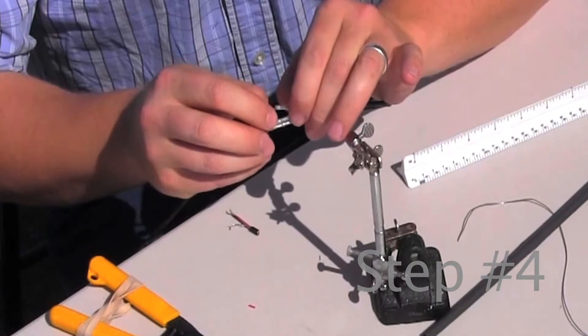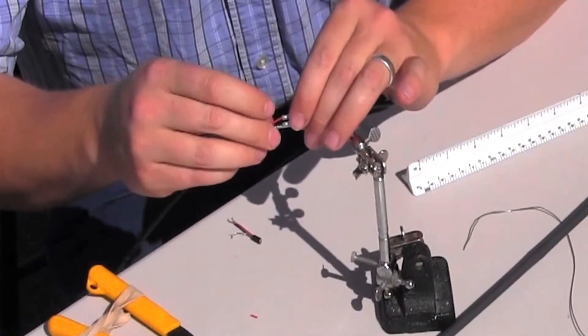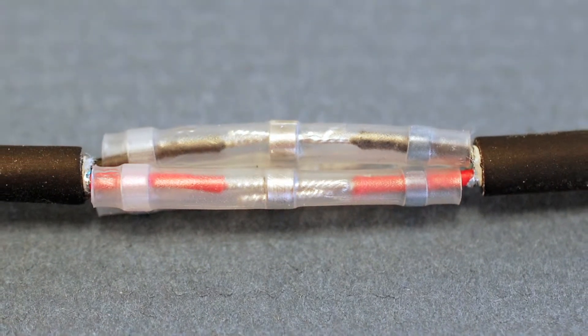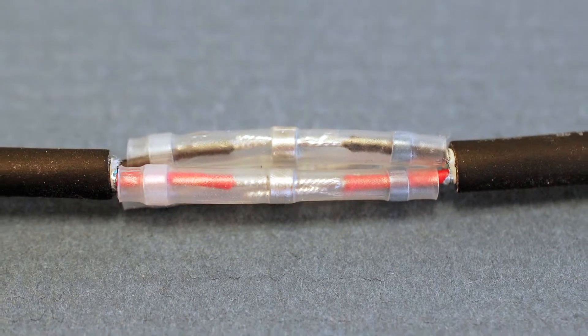Step four: slide the cable that is to be spliced into the other end of the solder sleeve, making sure the tinned ends are inside the solder rings. Verify that the wires match up, for example, red to red, black to black, and so on.